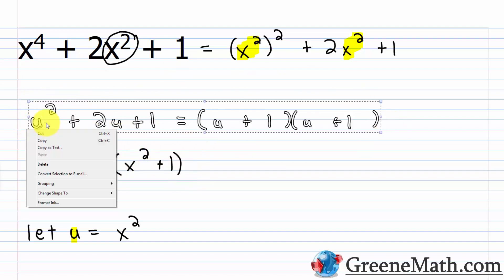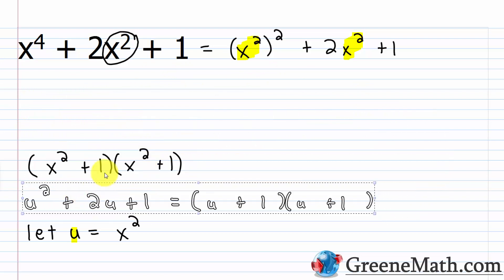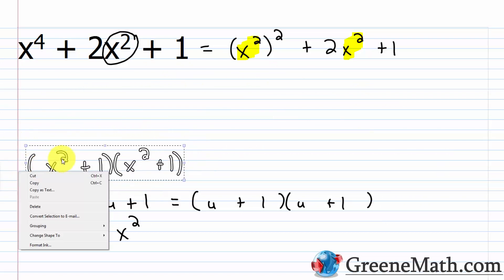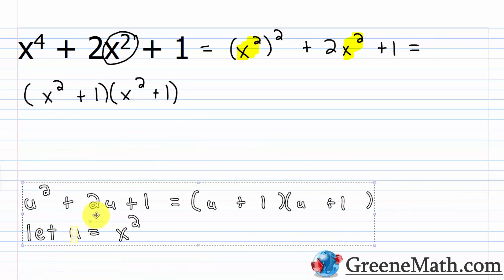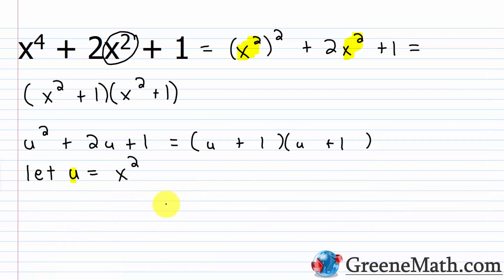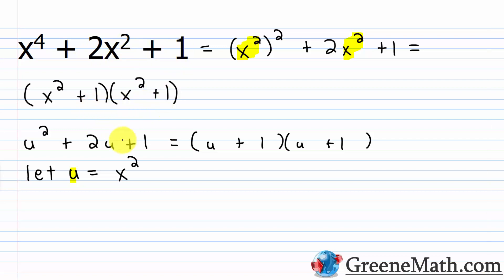You can check this using FOIL: x squared times x squared gives x to the fourth. The outer term is plus x squared, the inner term is plus x squared, giving 2x squared for the middle term. And 1 times 1 gives 1. So checking with FOIL, we confirm the correct factorization.